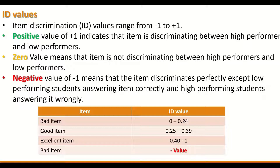Items are classified as good when the ID value is between 0.25 and 0.39, and as excellent when the value is between 0.4 and 1. If the ID value is negative, then the item is very bad and it is recommended to remove and exclude the item from the exam or test.